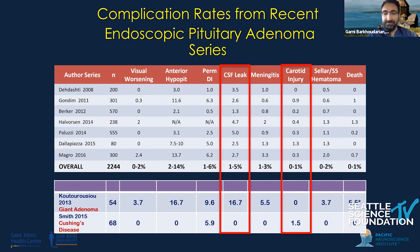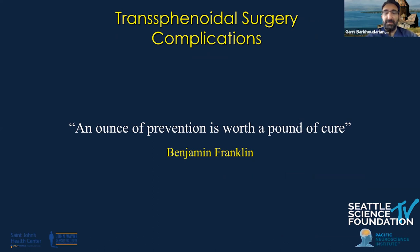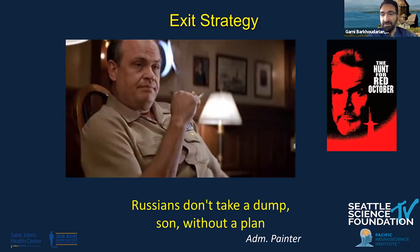However, looking at specific series — for example, from Pittsburgh, Maria Cuterousio discussed giant adenomas where the CSF leak rate was much higher — and in Cushing's disease cases the CSF leak is much lower. So there's a lot of variability based on pathology, even within the adenoma population, let alone non-adenomatous tumors. Many of you may be familiar with this quote from one of my favorite movies, where the admiral asks Jack Ryan how they'll get the submarine to them, and the answer is that everything is done with a plan from step one — and I think that's how we should be operating in the OR.